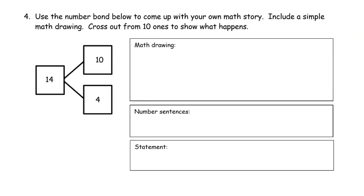Then use the number bond below to come up with your own math story. Include a simple math drawing and cross out from the ten ones to show what happens. So here's our math drawing. We need a group of ten and a group of four. One through ten - two five groups make ten. And then four - one, two, three, four.